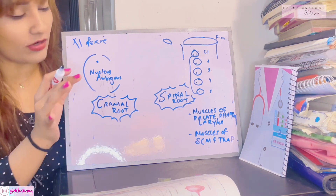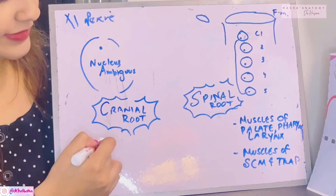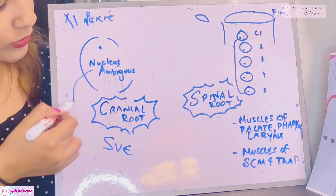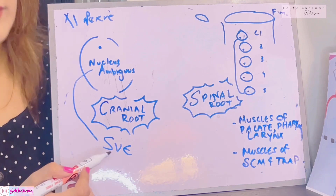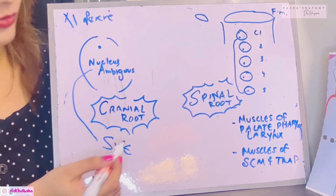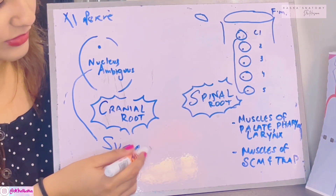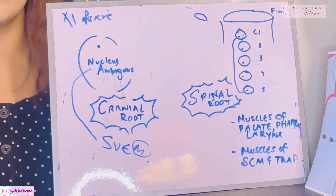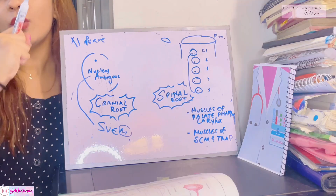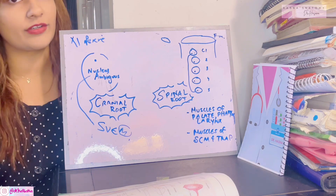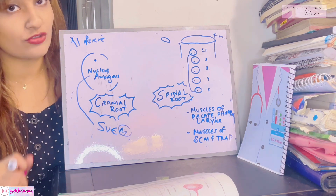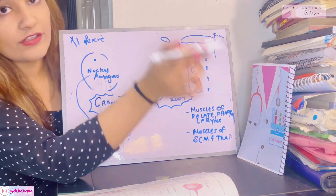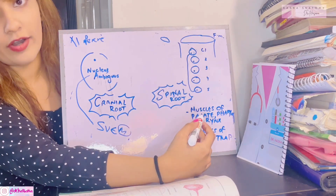The cranial root carries special visceral efferent fibers originating from the nucleus ambiguus. SVE fibers are motor fibers, so the motor fibers from the nucleus ambiguus form the cranial root. The cranial root then waits for the spinal root to be formed before they can leave the cranial cavity together.